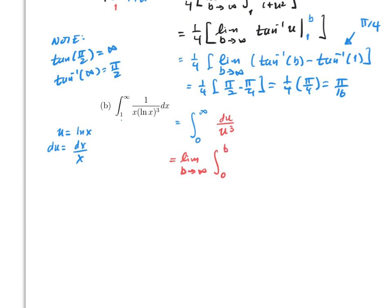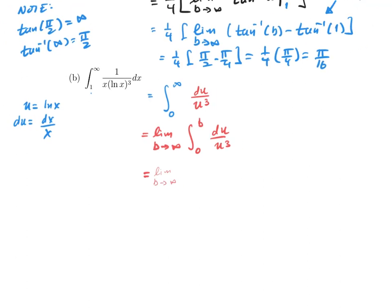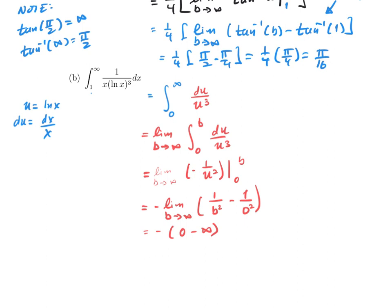This equals the limit as b goes to infinity of the integral from 0 to b of du over u³, which equals the limit as b goes to infinity of [−1/(2u²)] from 0 to b. Evaluating gives −1/(2b²) minus (−1/0²). Since we cannot divide by zero, that term is infinite — giving 0 minus infinity, so the integral diverges.